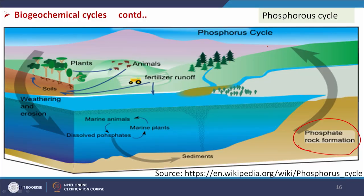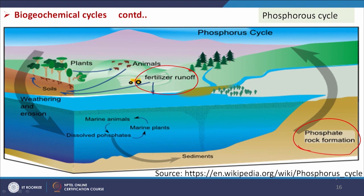Similarly, for the phosphorus cycle: phosphorus is present in phosphate rock, which is used for fertilizer production and given to plants. Fertilizer runoff comes to water bodies, and eutrophication can also occur with phosphorus — algae will also grow. Weathering and erosion also help return phosphorus to water and sediments. If we reduce fertilizer use, phosphorus stays in the natural recycle mode and the environment is not affected. That is why nowadays organic fertilizer use is being encouraged.